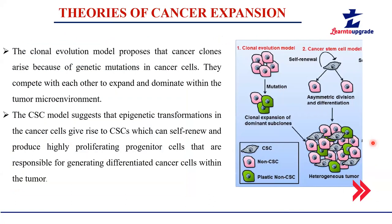There are various theories from past decades explaining how a single cancerous cell evolves. Among the many theories, two are most widely believed: the clonal evolution model and the cancer stem cell model. The clonal evolution model states that due to mutations occurring in normal tissue cells, the DNA is altered, forming cancerous cells from what were originally normal cells.